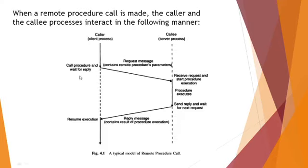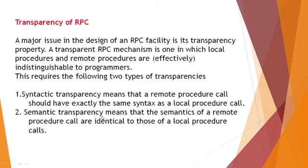In the RPC model there is a caller process and a callee process. The caller calls a procedure and waits for a reply. While calling, the caller sends a request message with the parameters. The server receives the request, starts procedure execution, and sends the result in a reply message. Until then the caller process is suspended. This completes the RPC model.